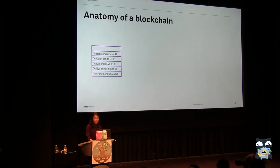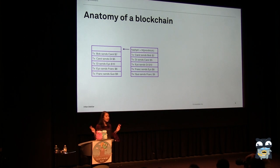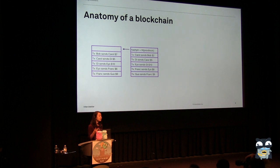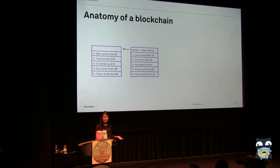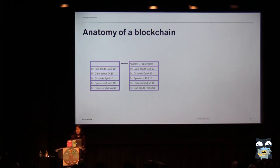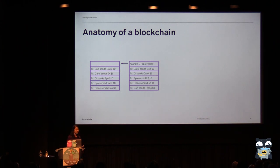We chain them together by including what's called a hash pointer. So I hash the previous block in my current block, and that way I've immutably committed to the entire history of all of the transactions that have happened. This is really nice if you think about applications for keeping track of balances or accounts or anything where you're moving value around.